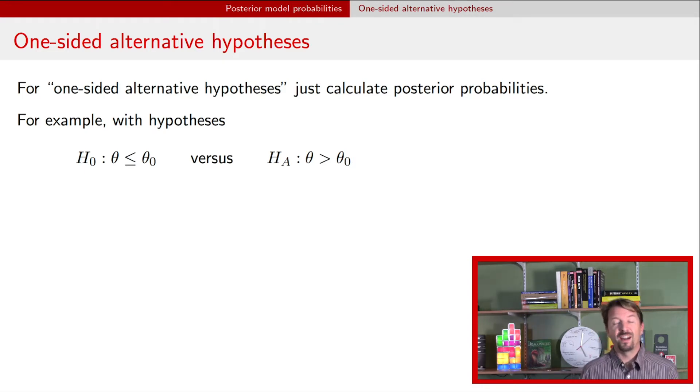Instead you're going to find a posterior for the parameter theta and you're just going to calculate relative to that posterior the area under the curve associated with either the null or the alternative hypothesis. And that's going to give you your probability or your belief that that hypothesis is true.